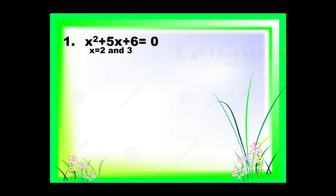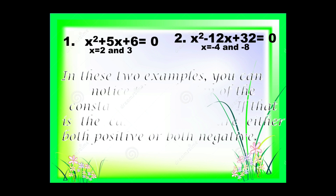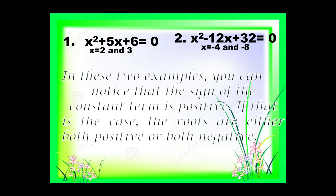Considering these two examples, you can notice that the sign of the constant term is positive — we have positive 6 and positive 32. If that is the case, the roots are either both positive or both negative, as you can observe in example 1 and example 2.